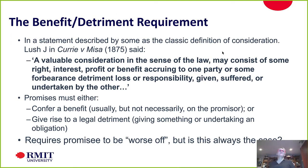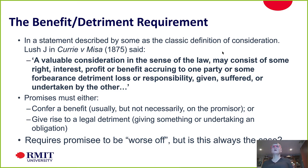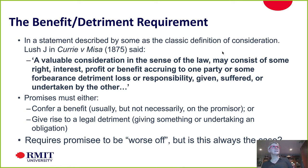Valuable consideration in the sense of the law may consist of some right, interest, profit, or benefit accruing to one party, or some forbearance, detriment, loss, or responsibility given, suffered, or undertaken by the other. This comes from the decision of Justice Lush in the 1875 case of Currie v Misa.